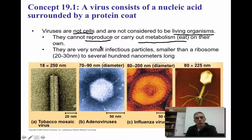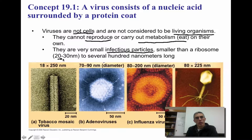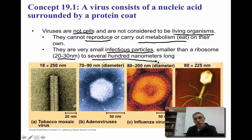When you look at a virus, they are very, very small — what we consider infectious particles. A lot of times they're actually smaller than a ribosome. A ribosome is around 20 to 30 nanometers in diameter, so that's pretty small. But there are some viruses that actually do get to several hundred nanometers in length.